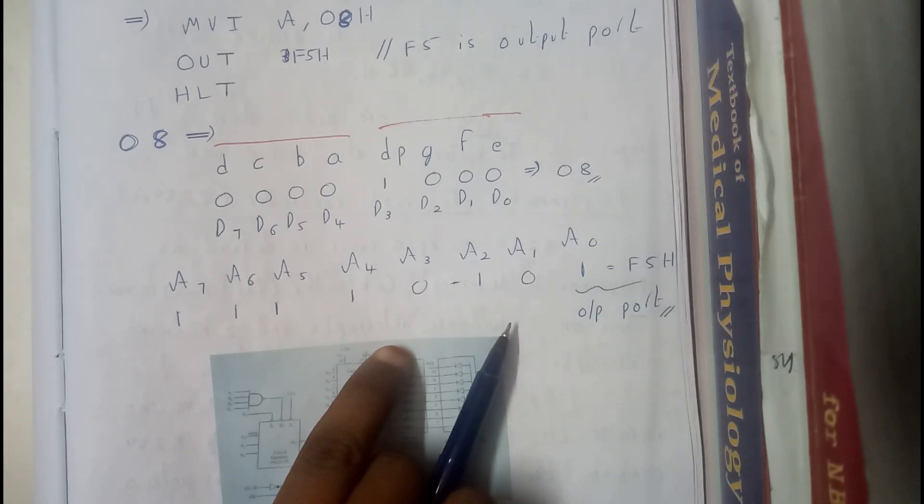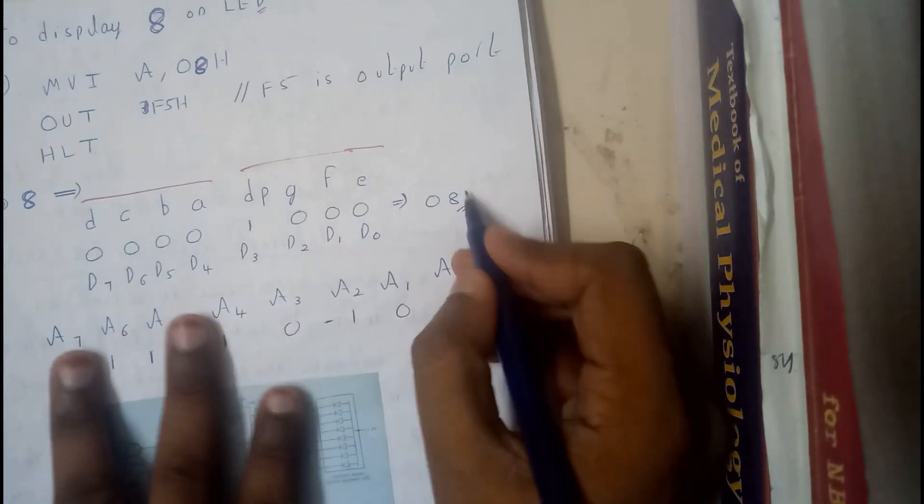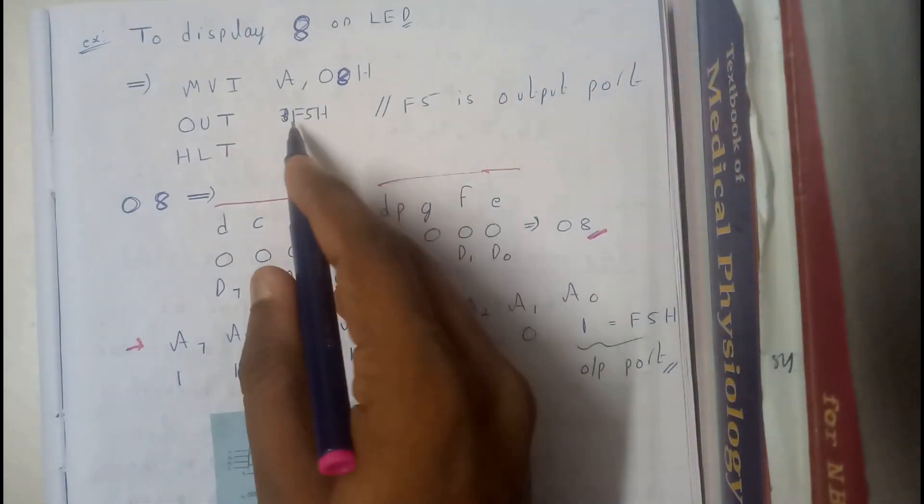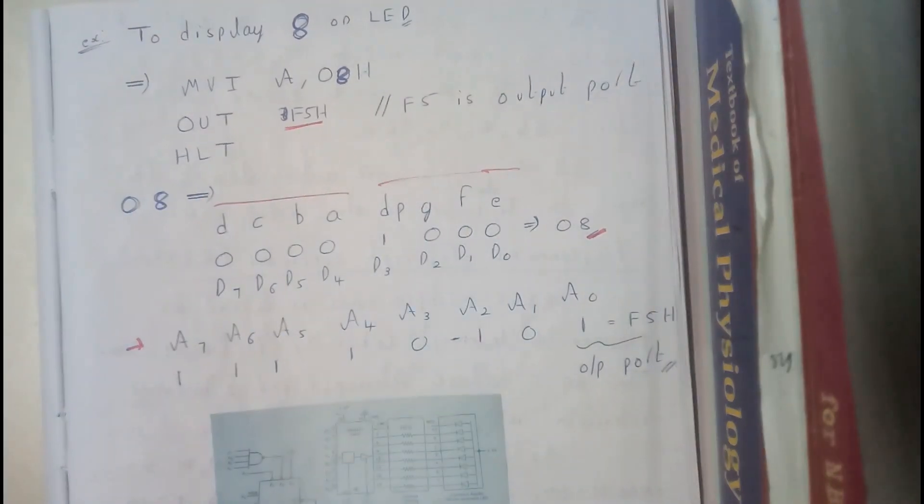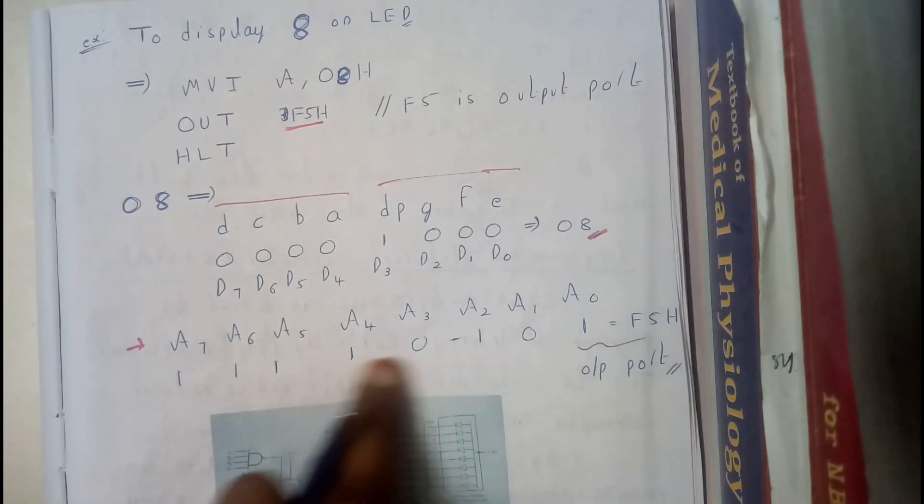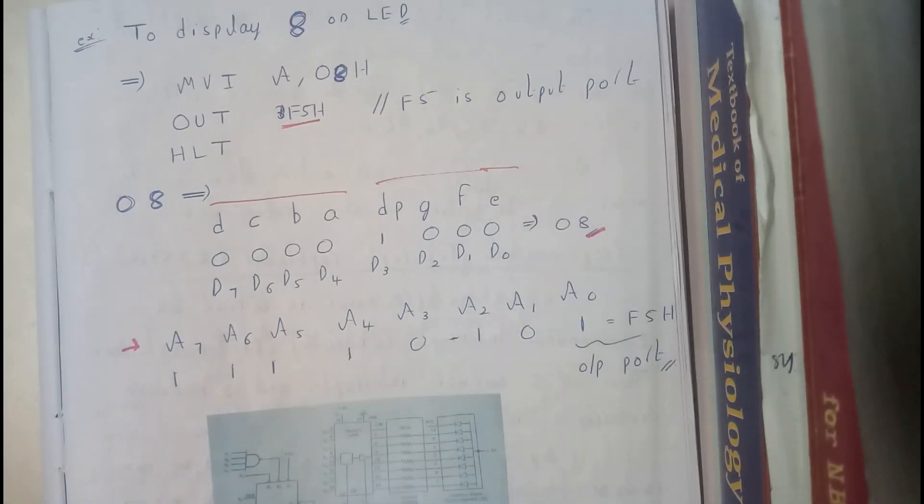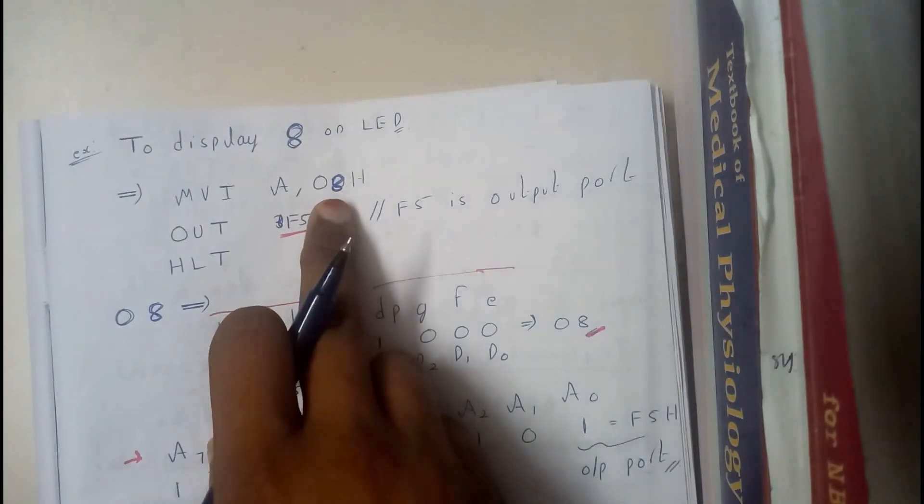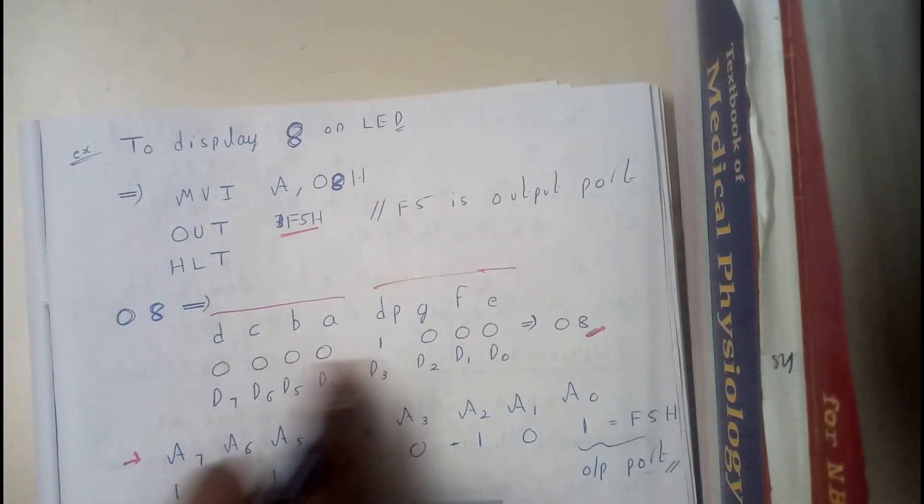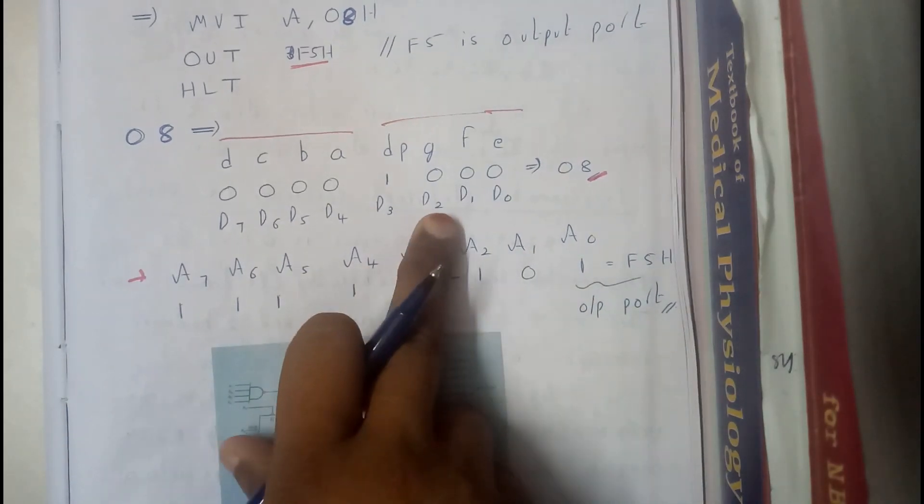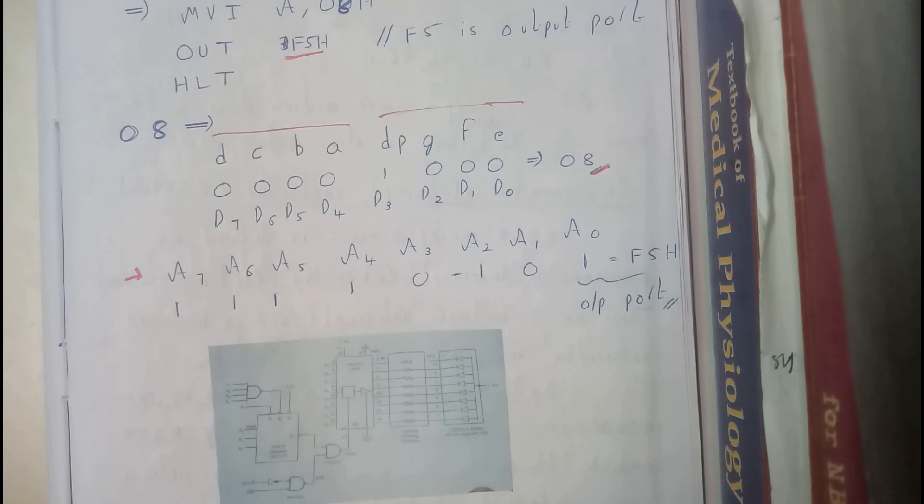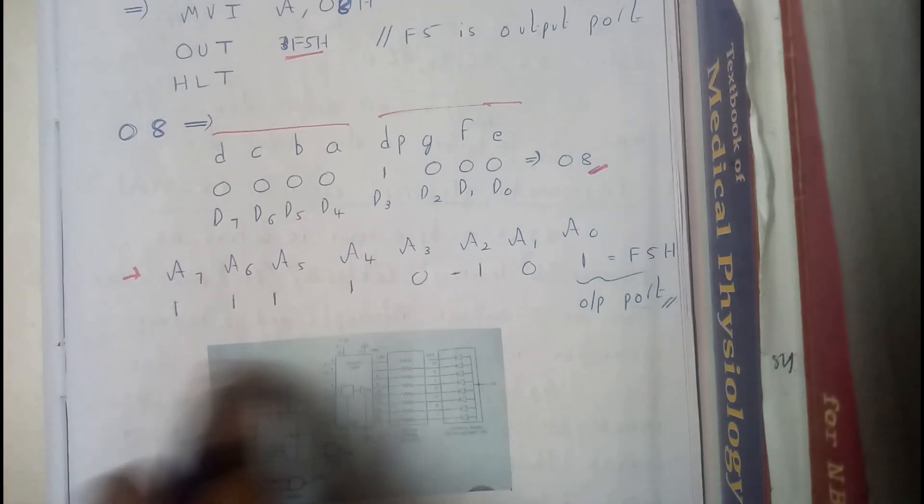Okay guys, just give me a second. Okay, this is the representation of 8, and this is the address representation where we need to show our output. So that address is nothing but F5. So that's what we have just denoted here. This is how you will be for solving the examples. Just you will be writing for 08 what you want to display, that code and the output code in terms of addresses, and this in terms of data. That's it.